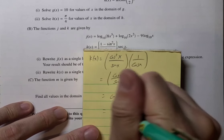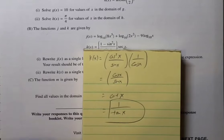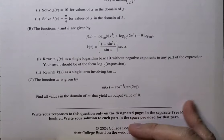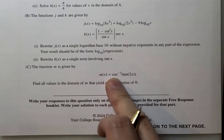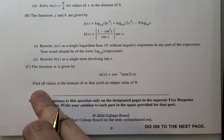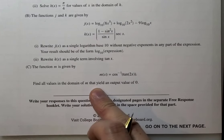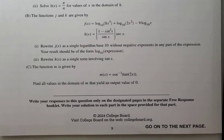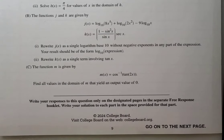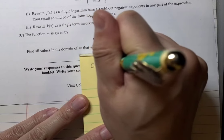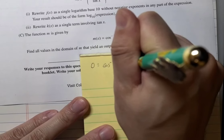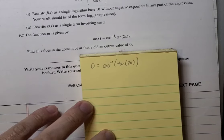Or, if you remember, cotangent is 1 over tangent x. And that's your answer. As simple as that. Nothing tricky about that. All right, part 3, or part c. The function m is given by m of x is arc cosine of tangent 2x. Find all values in the domain of m that yield an output value of 0. So this is probably the hard one of this problem. So let me shift this up. So we want 0 equals arc cosine of tangent 2x.